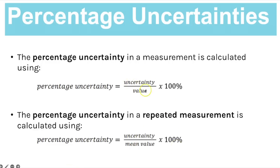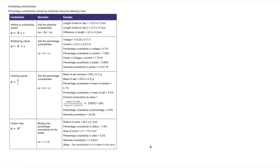The last thing to be aware of is a table from the AQA handbook on how to combine uncertainties. If you've worked out the uncertainty of one measurement and then another measurement and need to combine them, the table shows the different methods. The main one I've seen come up is adding or subtracting values: you work out the uncertainties for each individual measurement and then add them together, and the handbook provides some worked examples.